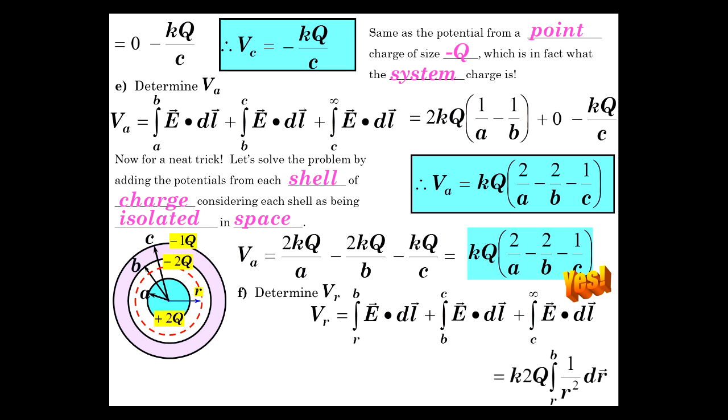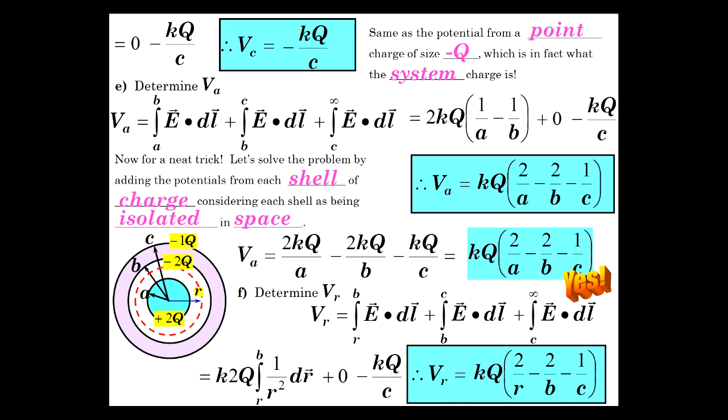So that's 2Q times k, r to b of 1 over r squared, the E field, plus zero minus kQ over c, which gives us the exact same answer we had previously, except instead of a, because we're not starting at a, we're starting at r. So hopefully that was helpful to understand another scenario of charge shells and what their potential is.